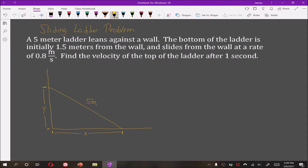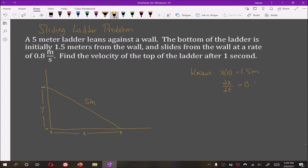Now, write down what we know. We know that initially the base of the ladder is located 1.5 meters away from the wall. So x(0) is 1.5 meters. We also know that dx/dt is 0.8 meters per second.